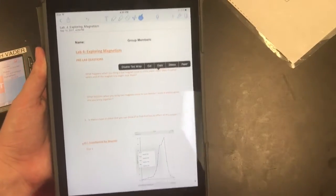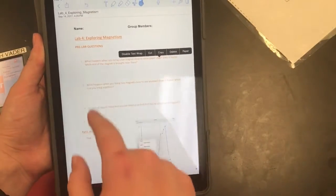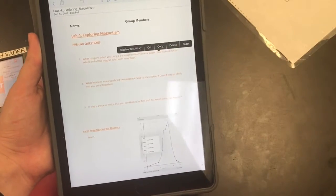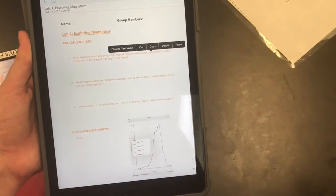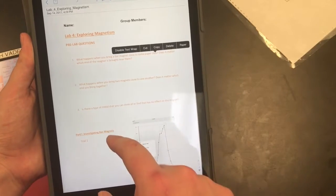Looking at our lab PDF here, I'm going to let you guys answer the first three questions. Let me know if you need anything like paper clips or other metals. They should be somewhere in the front of the room. Let me know if you need any help with that.